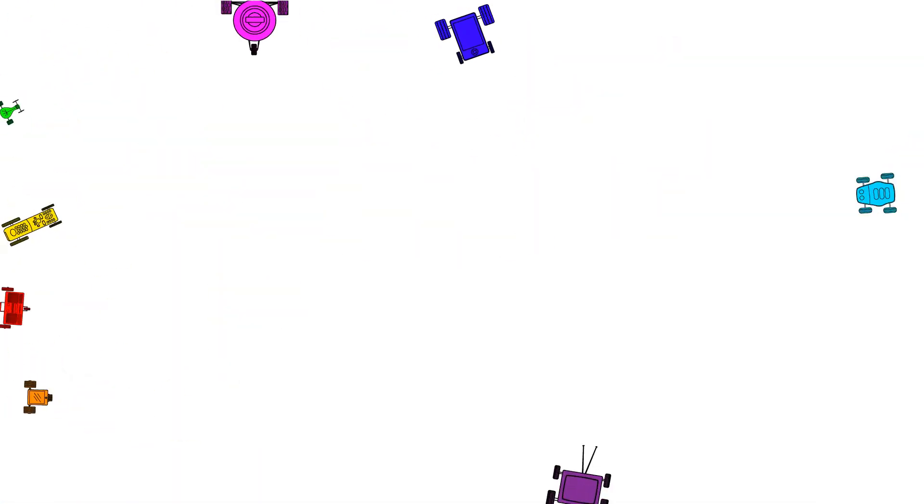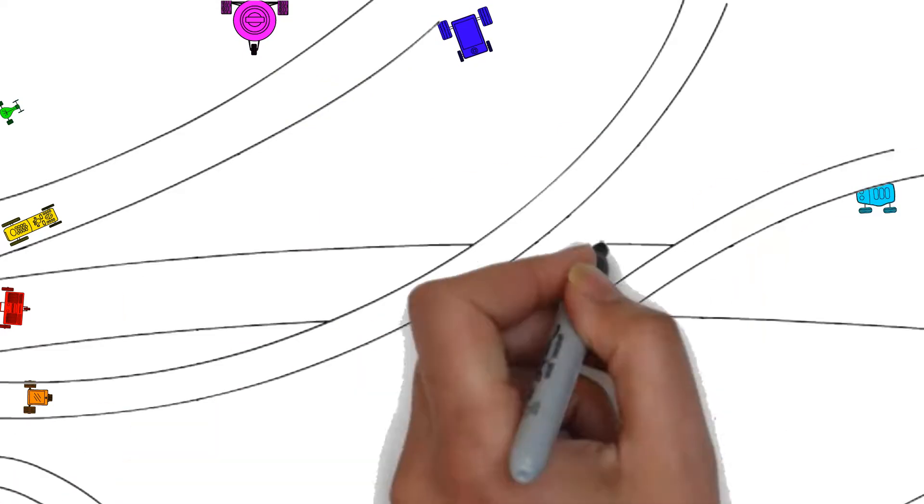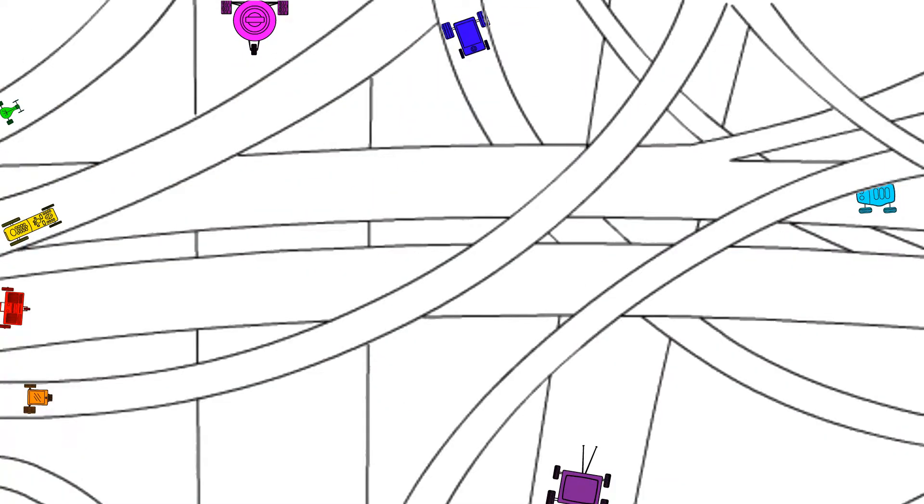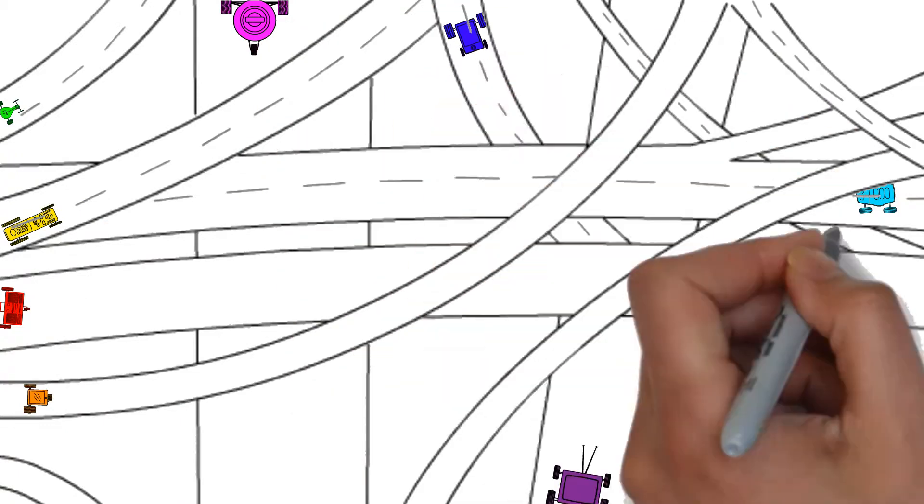While these connections make each device much easier to automate and control, every new addition adds another layer of complexity to the architecture of the network itself, which is often taken for granted.